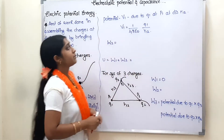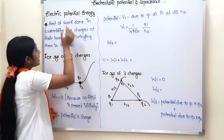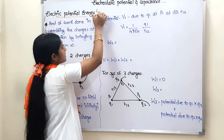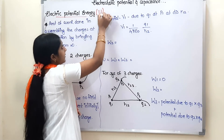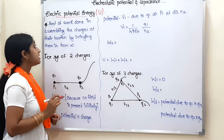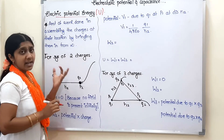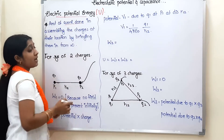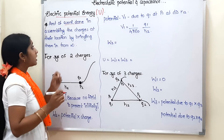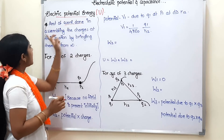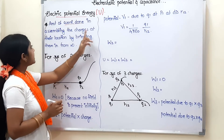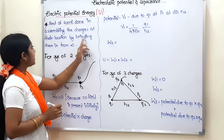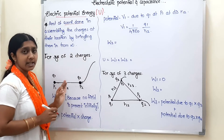Now we will talk about potential energy. The symbol of potential energy is capital U — Electric Potential Energy. What is this? It is the amount of work done in assembling the charges at their location by bringing them in from infinity.